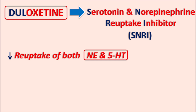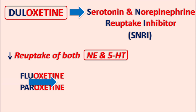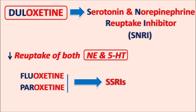We cannot classify this drug as an SNRI by its suffix alone, because we have a few other drugs with a similar suffix such as fluoxetine and paroxetine. Both of these drugs are not SNRIs — they are SSRIs, selective serotonin reuptake inhibitors. So these two drugs inhibit the reuptake of serotonin only, without any significant activity on norepinephrine reuptake. Even though these drugs have a similar suffix, they are not equivalent to Duloxetine, which is an SNRI inhibiting the reuptake of both norepinephrine as well as serotonin.